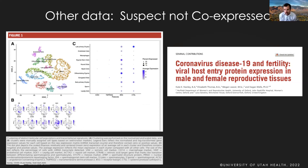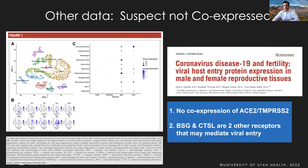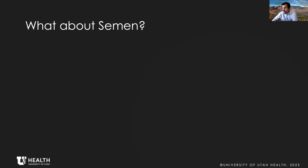Other data showed the same thing — a Fertility and Sterility paper showed there wasn't expression of these receptors in the male or female reproductive tract. They also looked at BSG and CTSL, two other receptors that may mediate viral entry, and found these cells likely lack the receptors needed. This may be the reason we don't see a big effect on offspring or the virus getting into semen. In our paper, we looked at 34 patients from Wuhan and did not find COVID in any of them — these were patients with mild to moderate illness, on average 31 days out.